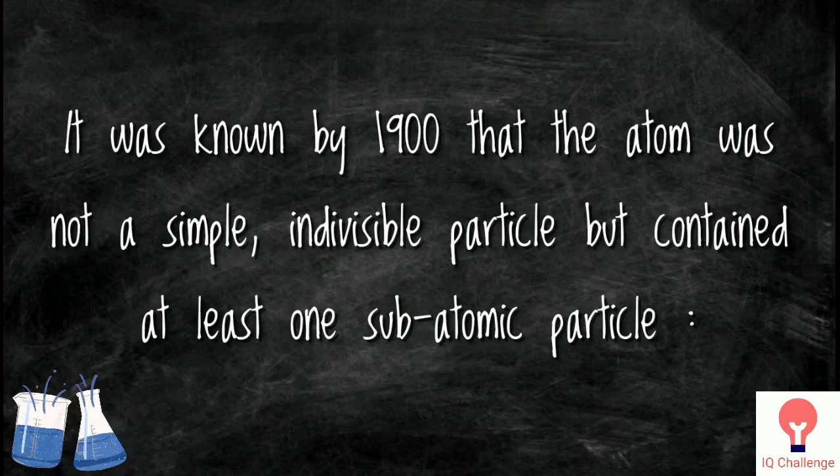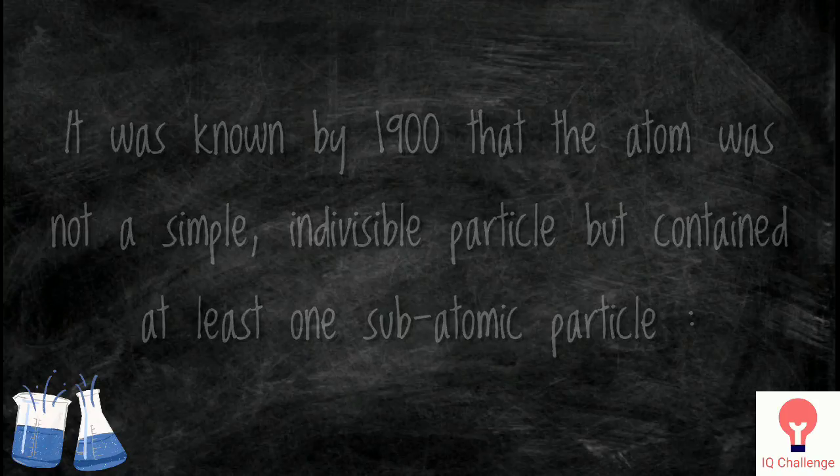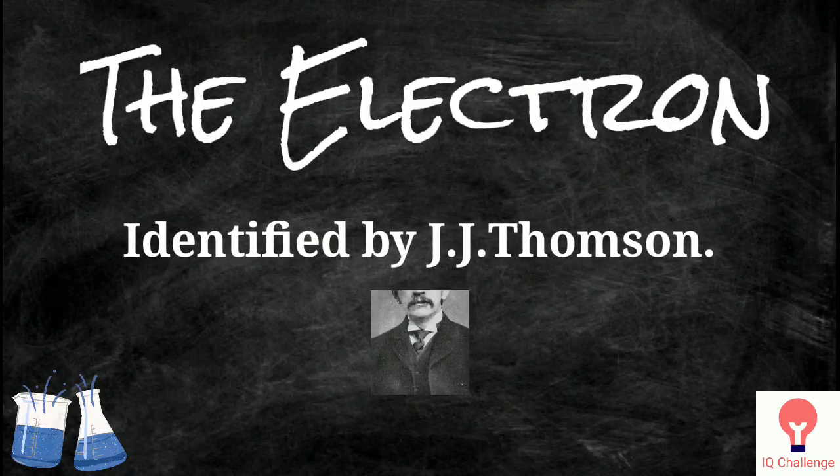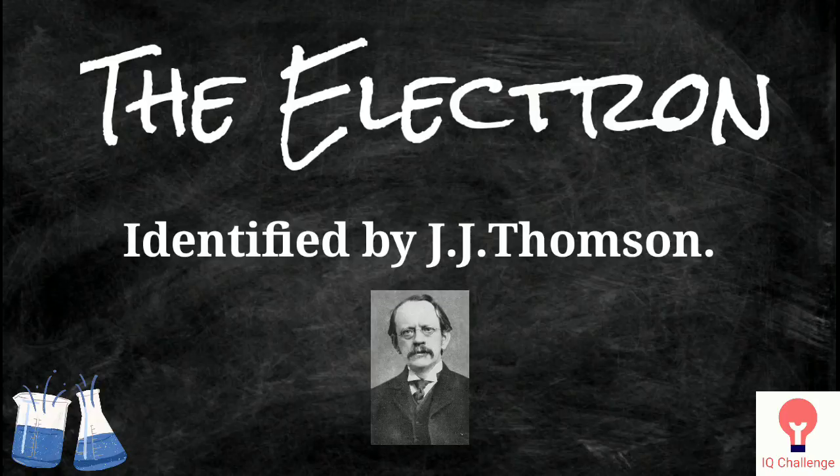It was known by 1900 that the atom was not a simple indivisible particle but contained at least one subatomic particle: the electron, identified by J.J. Thompson.